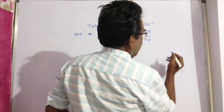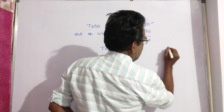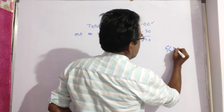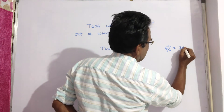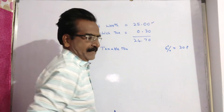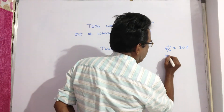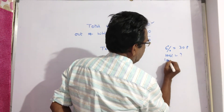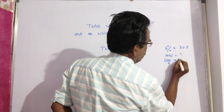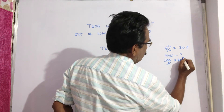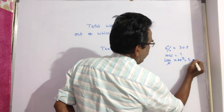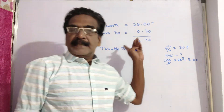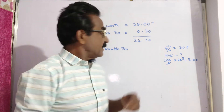Sales tax rate is 6%. Six percent is equal to 30 paise. So what is 100%? That is 100 divided by 6 into 30, which equals rupees 5. So the cost of taxable items is rupees 5.